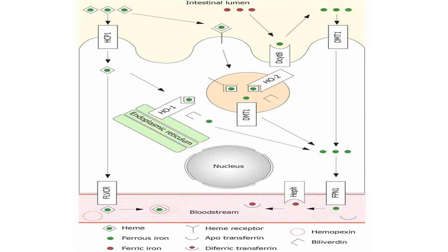Iron absorption means that iron is transferred from the intestinal lumen to the circulation through intestinal cells — from the intestinal lumen into the intestinal cell through the brush border, and then from the intestinal cell to the circulation through the basal border. The first rule states that iron does not move through membranes except in the ferrous form, so the ferric form must first be reduced to ferrous before it enters the intestinal cell through the brush border.